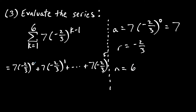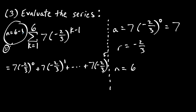A shortcut: n equals the top number minus the bottom number plus 1. Here, 6 minus 1 plus 1 gives n equals 6. This is a useful shortcut for finding n when using partial sums for a geometric series.